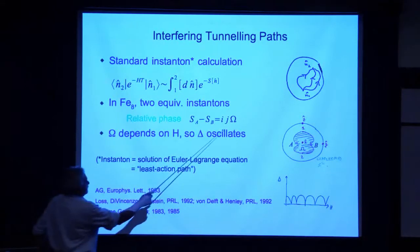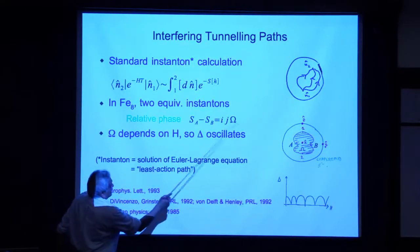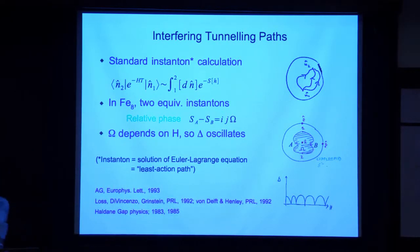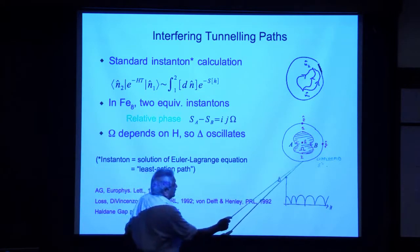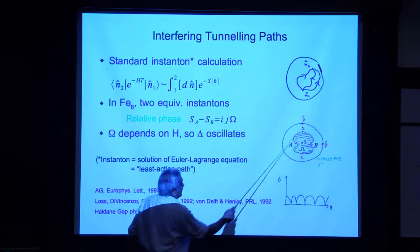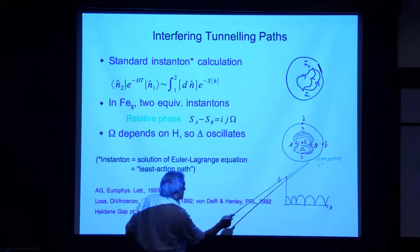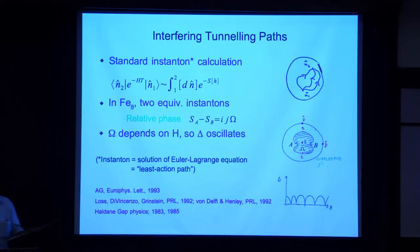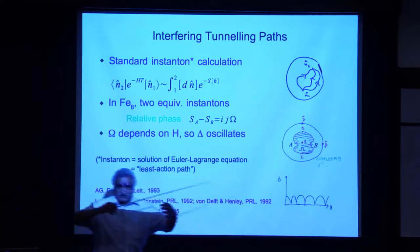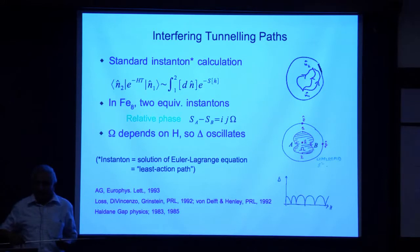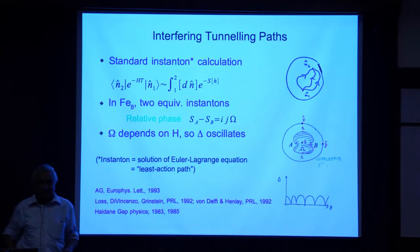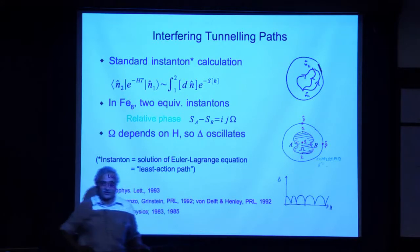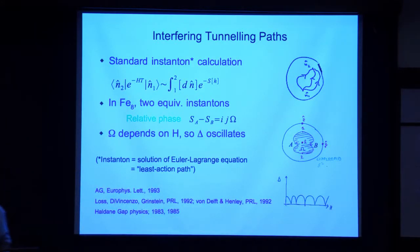The phase difference is given by the magnitude of the spin J times the area enclosed by this loop. With J equal to 10 and a maximum area of 2 pi, for zero magnetic field the relative phase difference is 10 times 2 pi, which is 20 pi. As I increase the magnetic field, the area of this peanut shape shrinks. When I have an odd integer multiple of pi, I get destructive interference. When I have an even multiple of pi, I get constructive interference. This is the good old two-slit interference pattern.